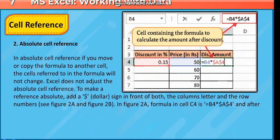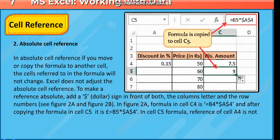In figure 2a, the formula in cell C4 is =B4*$A$4. After copying the formula to cell C5, it becomes =B5*$A$4. In the cell C5 formula, the reference of cell A4 is not changed.